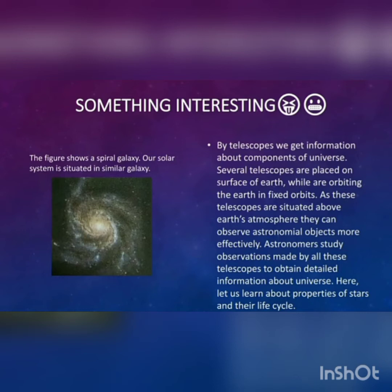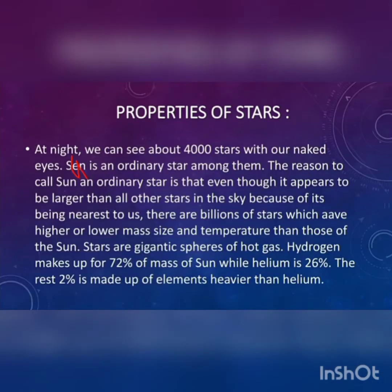Astronomers study observations made by all these telescopes to obtain detailed information about the universe. Now let us learn about the properties of stars and their life cycle. At night we can see about four thousand stars with the naked eye.